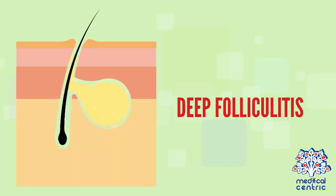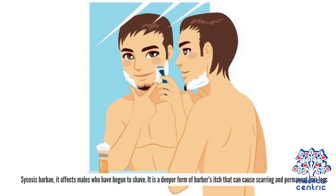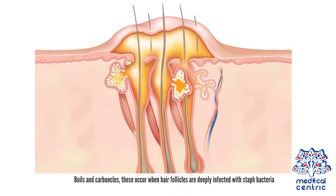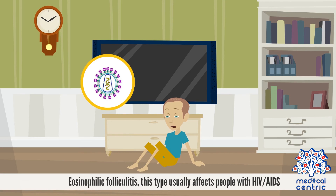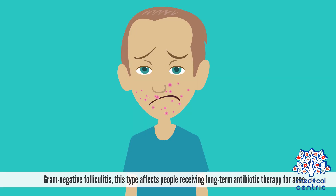Deep folliculitis. Sycosis barbae affects males who have begun to shave. It is a deeper form of barber's itch that can cause scarring and permanent hair loss. Boils and carbuncles occur when hair follicles are deeply infected with Staph bacteria. Eosinophilic folliculitis usually affects people with HIV-AIDS. Gram-negative folliculitis affects people receiving long-term antibiotic therapy for acne.